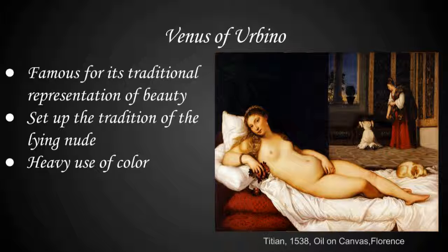He is very famous for his color style, which is named Colorito — a heavy use of color with many layers applied over and over again to create contrast. As you can see here on the couch as well as the skin tones of Venus, it helps contrast the painting and diverts your gaze to certain details you wouldn't notice in a normal style.